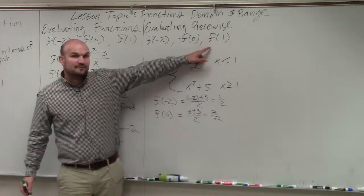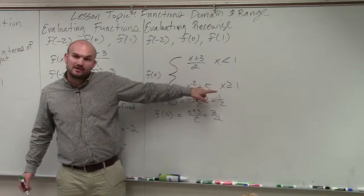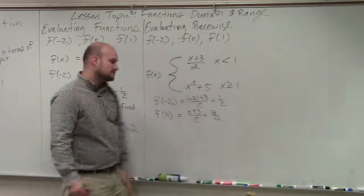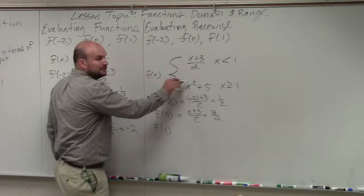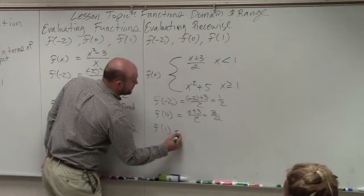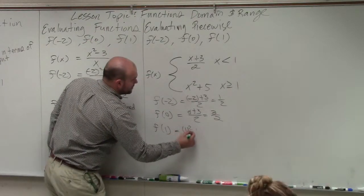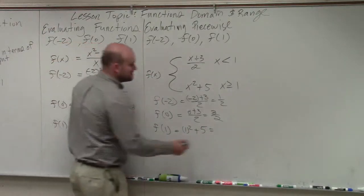And then for the last one, f of 1. Now my input is not less than 1, but it's greater than or equal to 1. So therefore, I need to use this rule. Do you guys see why I have to use the other rule? So therefore, this becomes 1 squared plus 5. 1 squared is 1 plus 5 is 6.